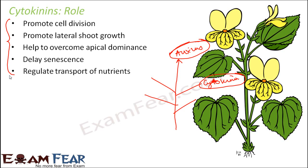With this, we have covered all the growth-promoting hormones: auxin, gibberellins, and cytokinins. Thinking of auxin, it is primarily required for vertical growth of the plant. When you talk about gibberellins, they are primarily required for stem elongation. And cytokinins are primarily required for cell division and delaying aging.